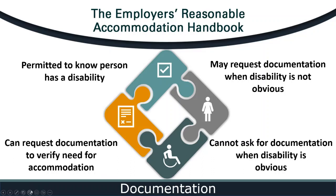For example, let's say an employee who has muscular dystrophy and uses a wheelchair requests dictation software to input information into the computer. The employer knows the employee has a disability, but it may not be obvious why a person who uses a wheelchair is requesting dictation software. In a case like this, the employer may consider asking the employee for documentation that describes the disability impairment in terms of the nature, severity, and duration; describes the activity or activities the disability limits; and the extent to which the disability limits the employee's ability to perform the job or job tasks. It can be helpful for employers to have a standard form employees can give their medical providers to help them understand what information employers need related to performing the job.